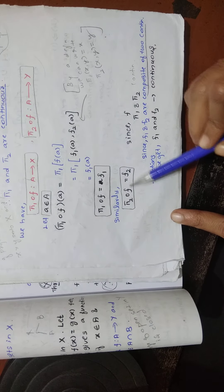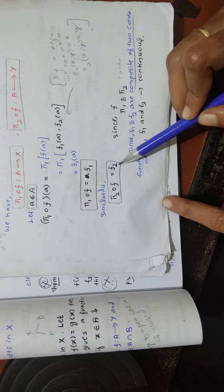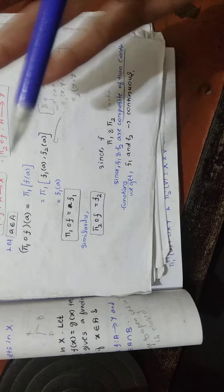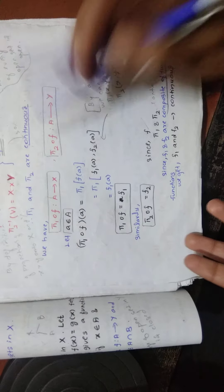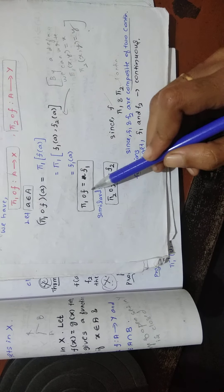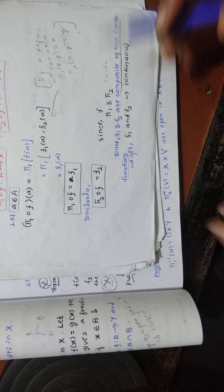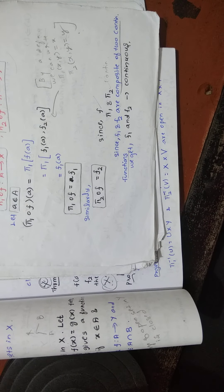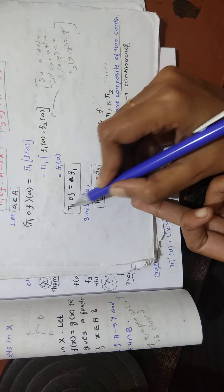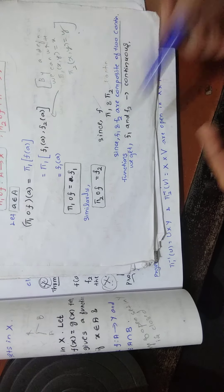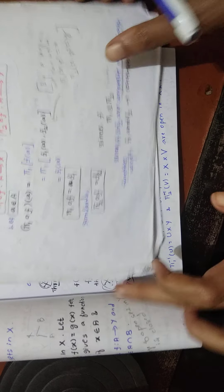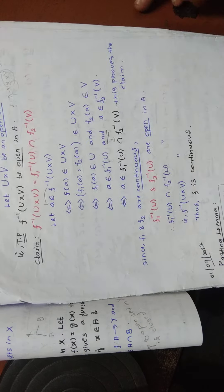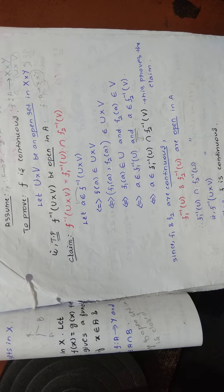Similarly, (π₂∘f)(a) = f₂(a). Since f is continuous by assumption, and π₁ and π₂ are also continuous as just shown, f₁ and f₂ are compositions of two continuous functions. Therefore f₁ and f₂ are also continuous. That is how the first part of the theorem is proved. The converse part will be explained in another video.